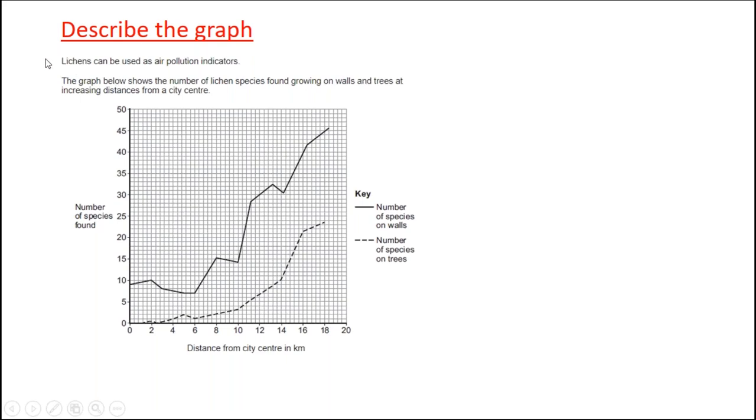So lichens can be used as air pollution indicators. The graph below shows the number of lichen species found growing on walls. That's the dark line. And the number growing on trees. That's the dotted line at increasing distances from a city center. So if you're asked to describe that graph, all we have to do is state what is happening and give data. So what is happening? Number one, what is happening is that clearly the further you go from the city center, the more lichens you've got. Overall, the number of lichens on walls and on trees increase the further you are from the city center.